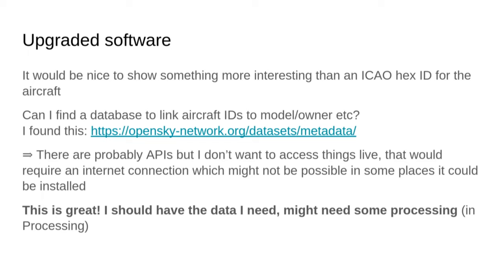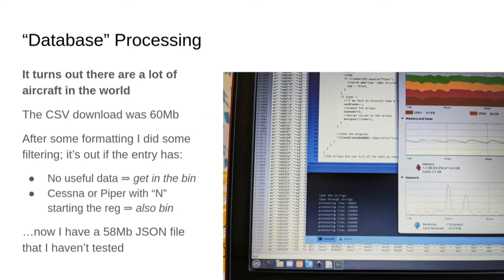I downloaded it and thought I could do all that preprocessing and turn it into something I could probably access in Python. It turns out there are a lot of aircraft in the world. I didn't notice at the time, but it was a CSV file and it was about 60 megabytes, which is quite a lot of text.